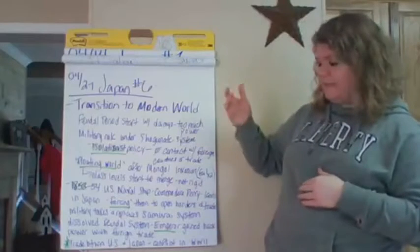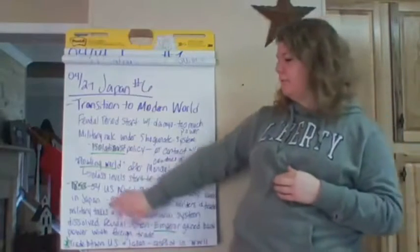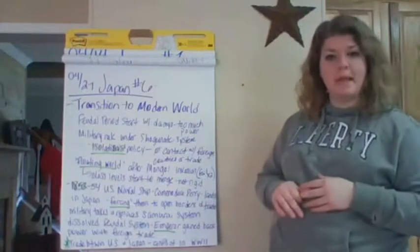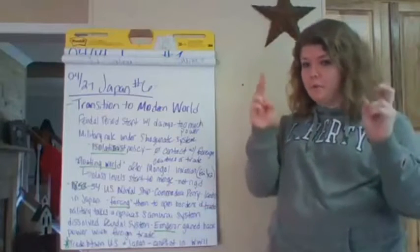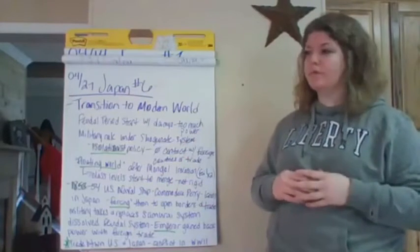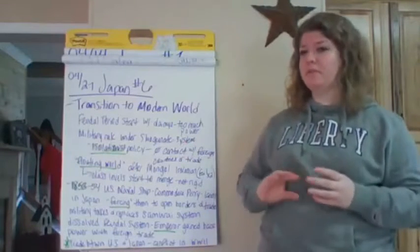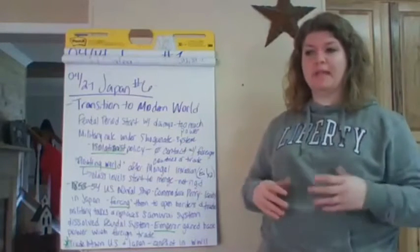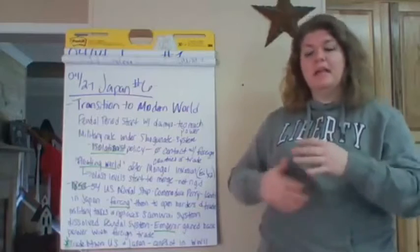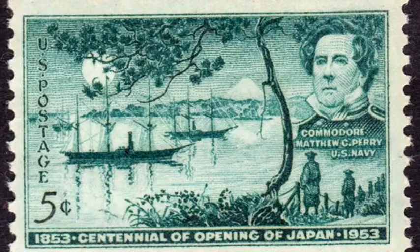The official effective end to feudalism comes in the mid-1800s when a U.S. naval ship under Commodore Perry lands in Japan — right before the Civil War here in the United States. Perry is there to force the Japanese to trade and open their borders. He doesn't come alone; he shows up with a large naval force, essentially bullying Japan into trading through military might.